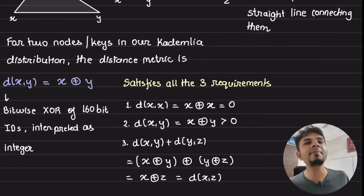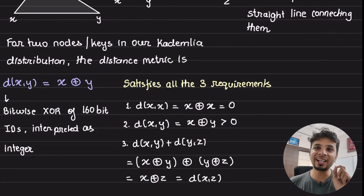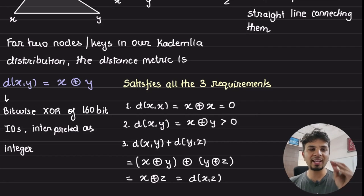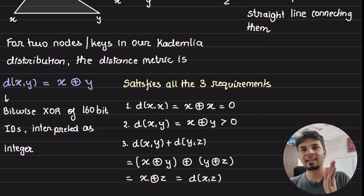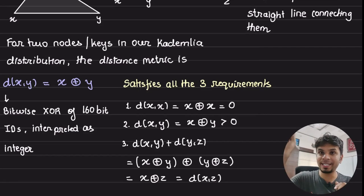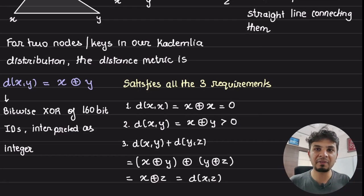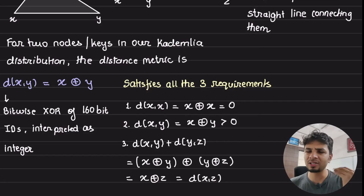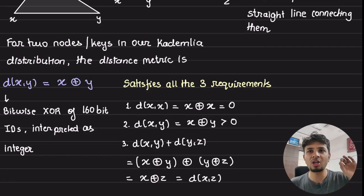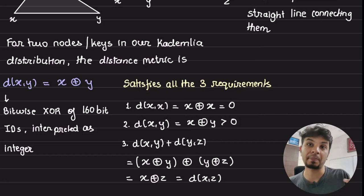Kademlia uses a brilliant approach — it uses XOR as the distance function: d(X, Y) = X XOR Y. The two 160-bit IDs are XOR'd together and the integer represented by the result becomes the distance between the two nodes. This is such an efficient implementation — no explicit measurement or tracking needed. It is a raw, simple, fast, efficient XOR function, very efficient to compute repeatedly.